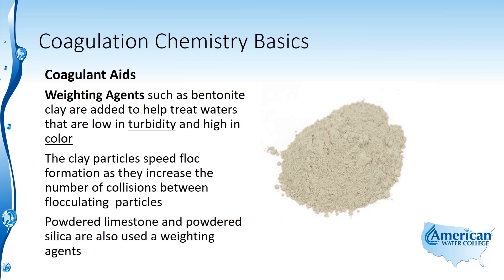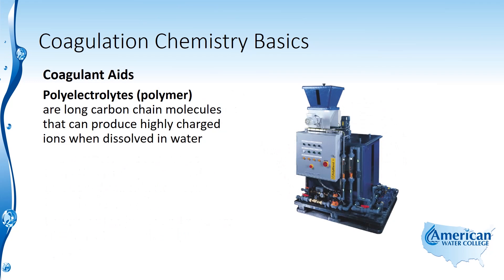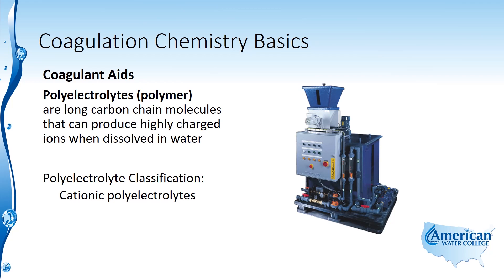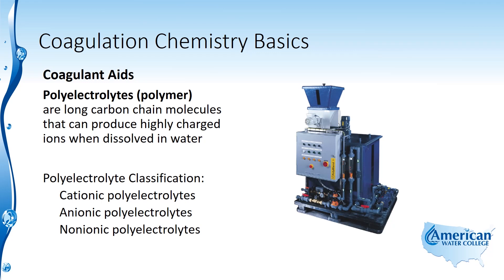Poly electrolytes, also called polymers — more commonly called polymer by operators — are long carbon chain molecules that produce highly charged ions when dissolved in water. They are classified according to their charge. Cationic poly electrolytes produce positive charges when dissolved in water. Anionic poly electrolytes produce negatively charged ions when dissolved in water. Non-ionic poly electrolytes, despite the name, release both positive and negatively charged ions when dissolved in water, so the charges effectively neutralize one another.